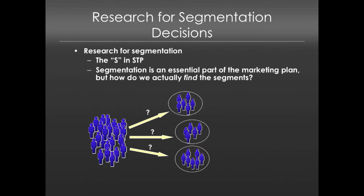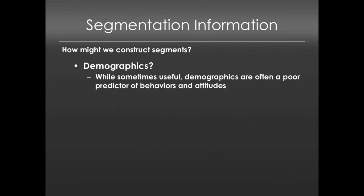So there are a lot of different ways to construct segments. For instance, we could use demographics. Sometimes this is useful, but demographics are a poor predictor of behavior and attitude. So we might form segments by things like gender, but it turns out that's not the best way to necessarily predict people's behaviors, which is really what we want to do — we want to predict people's purchase behaviors.